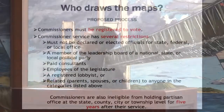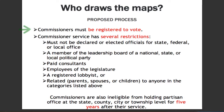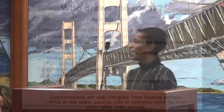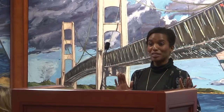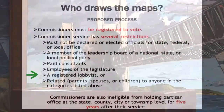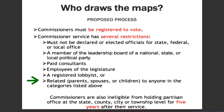All commissioners must be registered to vote. Commissioner service does have some restrictions: they must not be declared or elected officials for state, federal, or local office; they cannot be a member of a leadership board of a national, state, or local political party; we disallow paid consultants and employees of the legislature from serving — though past employees of the legislature are still eligible. You cannot be a registered lobbyist, and you cannot be related — parents, spouses, children, stepchildren — to anyone in the categories above.